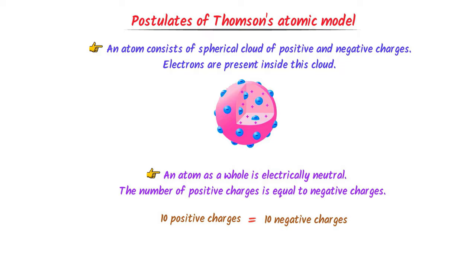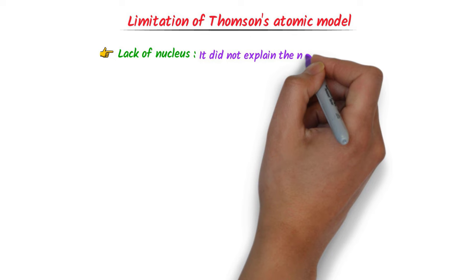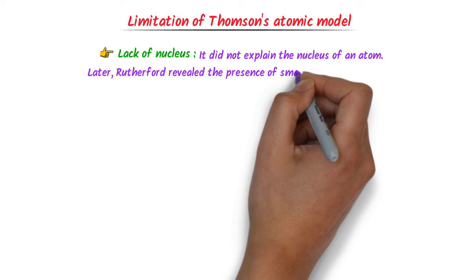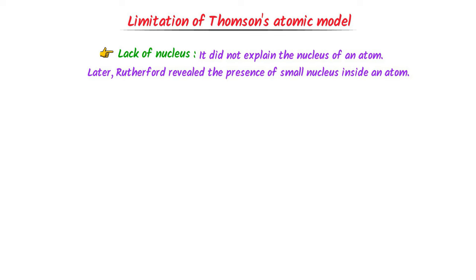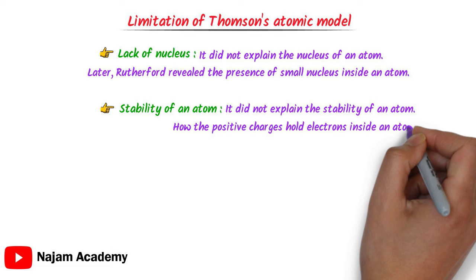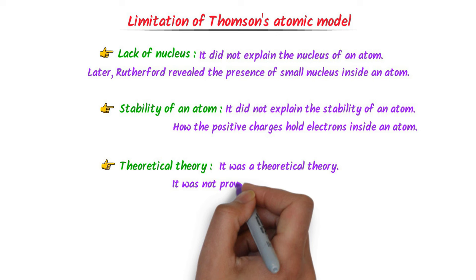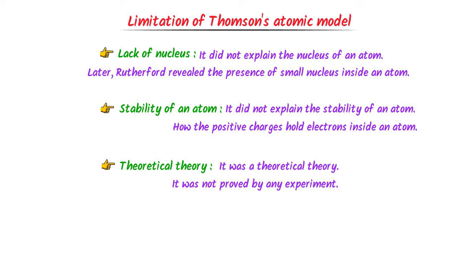Now, what are the limitations of Thomson's atomic model? There are several limitations. Firstly, the lack of nucleus — Thomson's atomic model did not explain the nucleus of an atom. Later, Rutherford revealed the presence of a small nucleus at the center of an atom. Secondly, the stability of an atom — it did not explain how the positive charge holds the electrons inside an atom. Thirdly, it was a totally theoretical model and was not proved by any experiment.